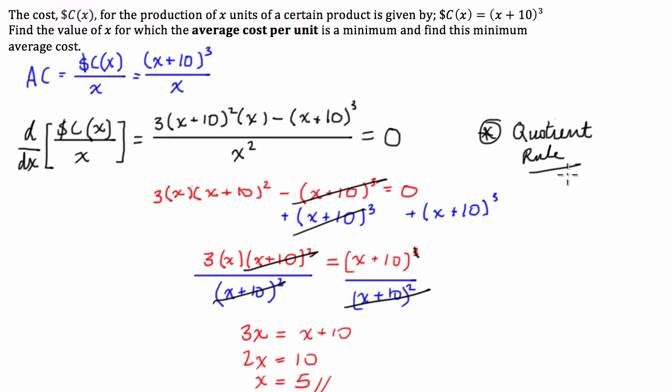So, all we have to do now is substitute 5 into the average cost function. So, where am I going to do it? I'll just give myself a bit of space here. So, I'm going to go C(5) over 5 is equal to (x+10)³, but this x, sorry, is going to be a 5. A 5 divided by 5. Okay, because of my calculator's in the other room, let's see if we can evaluate this by hand. So, this is going to be 15³ over 5.